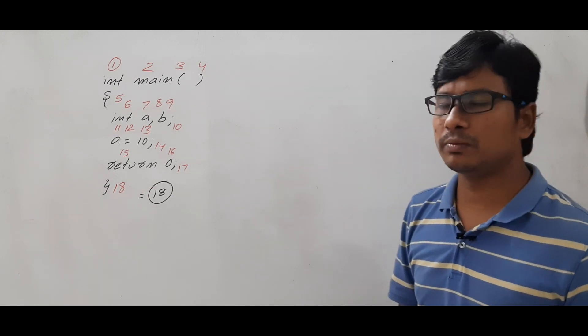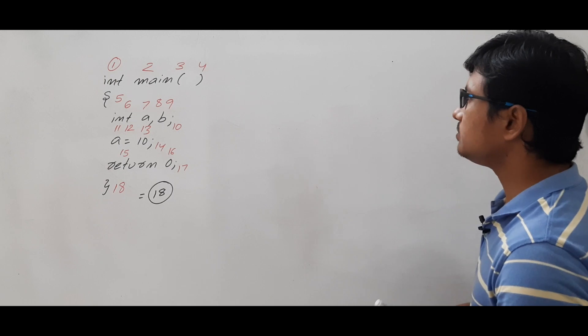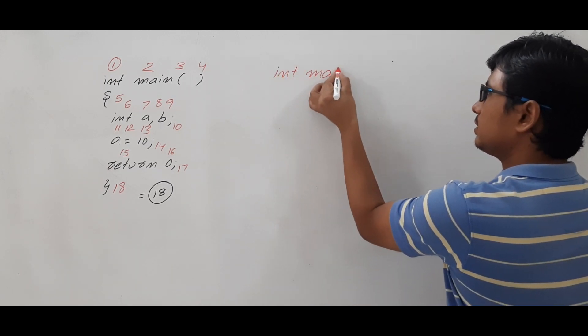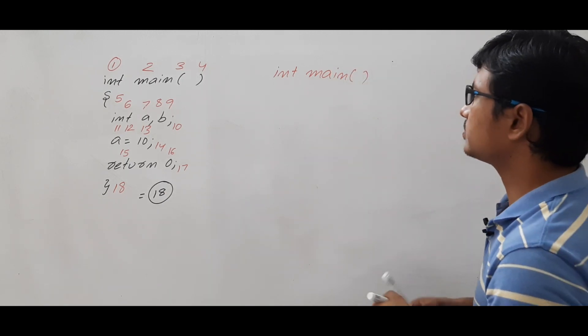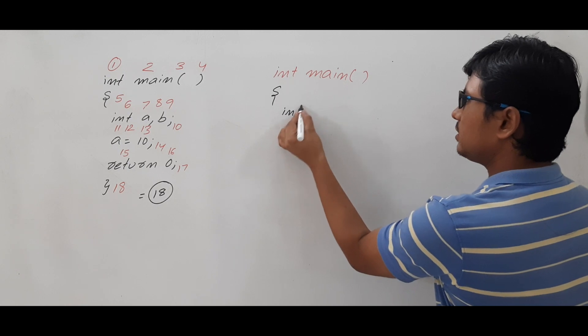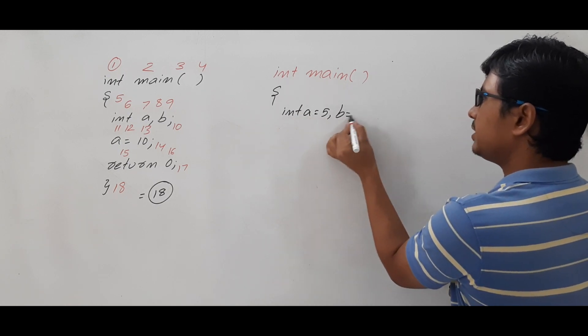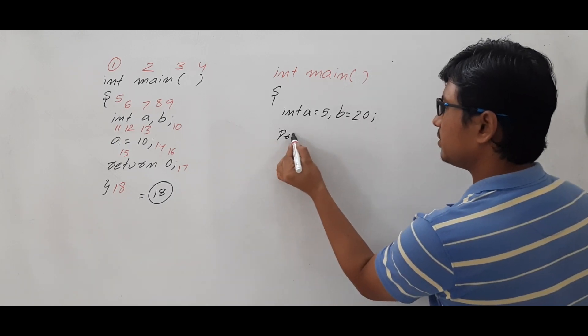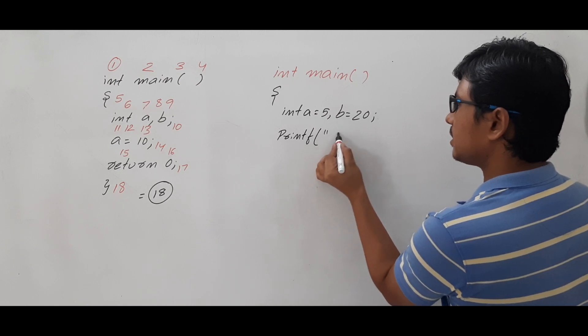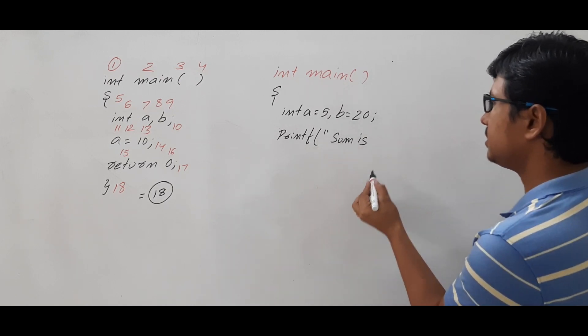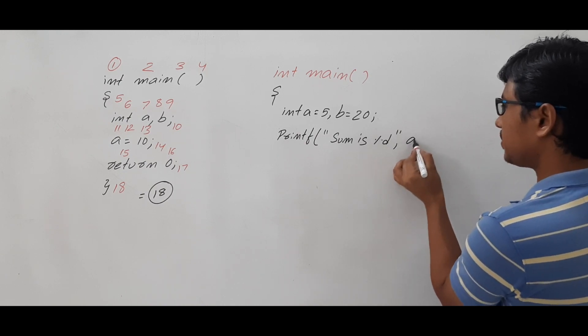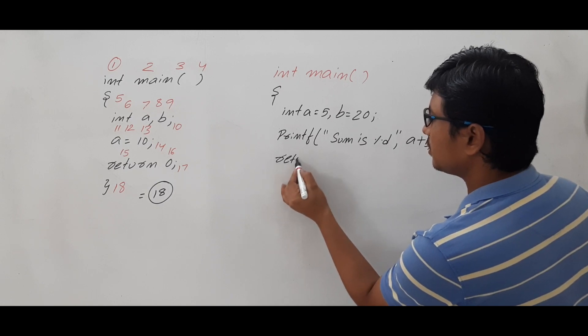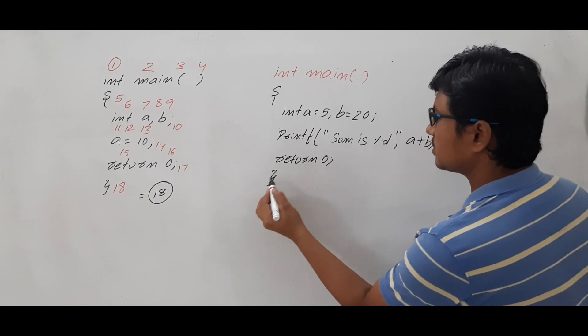To make you understand the concept in a better way, let me take another example. Int main, int a is equal to sum 5 comma b is equal to 20. Print of, the sum is %d, a plus b, then return 0, and this is the close brace.